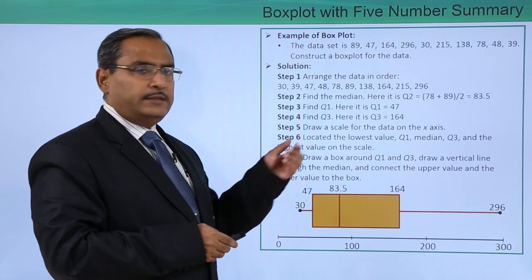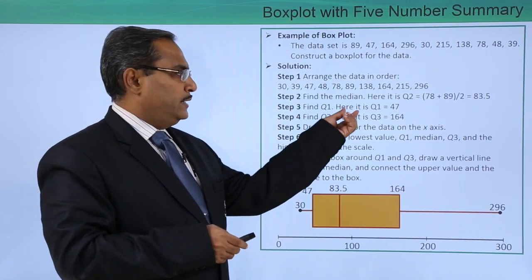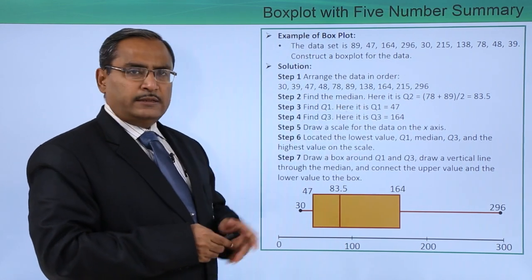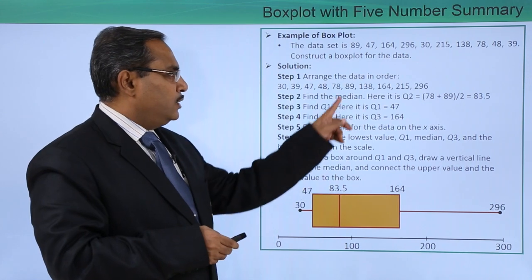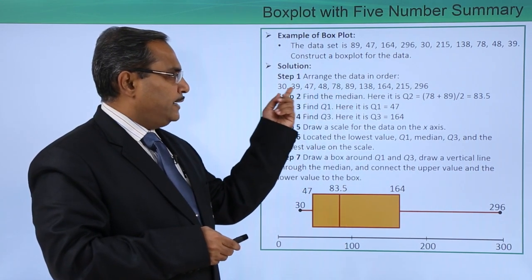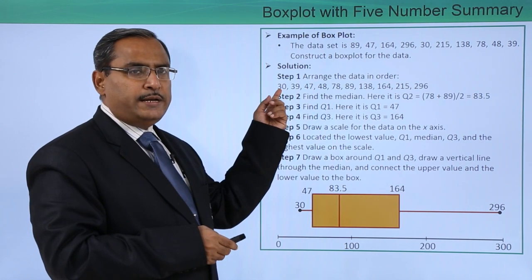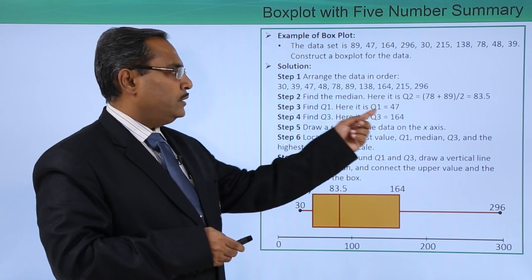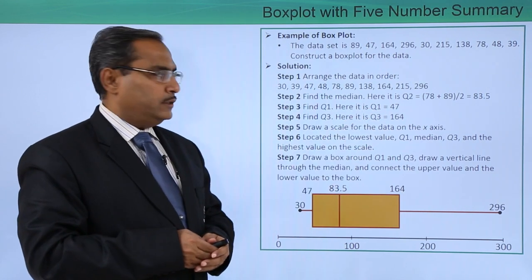Now we are going to find Q1. Here Q1 is equal to 47. What is the median here? That is 83.5. So 83.5 is falling here. In this particular set of data, calculate its median value. Now we are getting 47 as the middle most one, so Q1 is equal to 47.